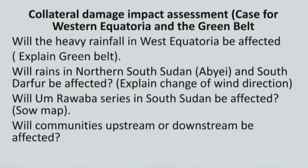Will rains in northern Sudan, Abyei, and South Darfur be affected? Will the Rawaba Series in South Sudan be affected? The geological map of Sudan shows where our groundwater is. The Rawaba Series is fed through the water of the Sudd because the stagnant water seeps through. When I went from Kapoeta to Narus, there were a number of boreholes — there is a difference between a borehole and a deep bore. In two to four years, a shallow borehole's water can completely disappear. Will communities upstream or downstream be affected?